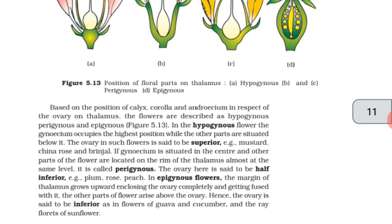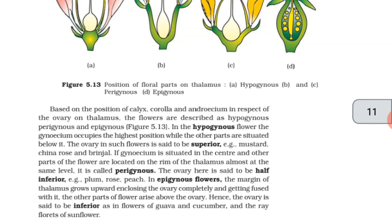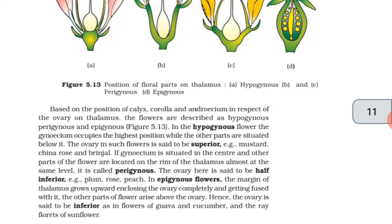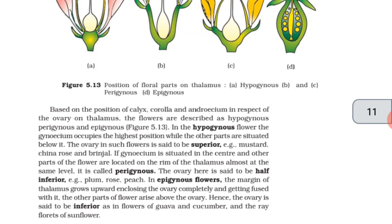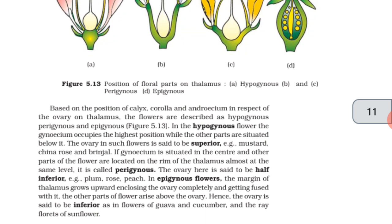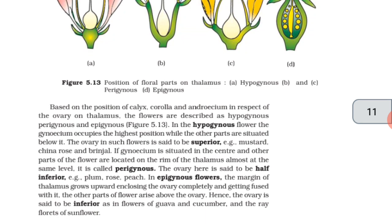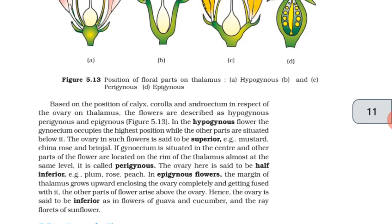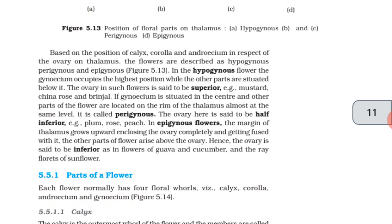If gynoecium is situated in the center and other parts of the flower are located on the rim of the thalamus almost at the same level, it is called perigynous. The ovary here is said to be half inferior, e.g. plum, rose, peach. In epigynous flowers, the margins of the thalamus grow upward enclosing the ovary completely and getting fused with it. The other parts of flower arise above the ovary, hence the ovary is said to be inferior, as in flowers of guava and cucumber and the ray florets of sunflower.